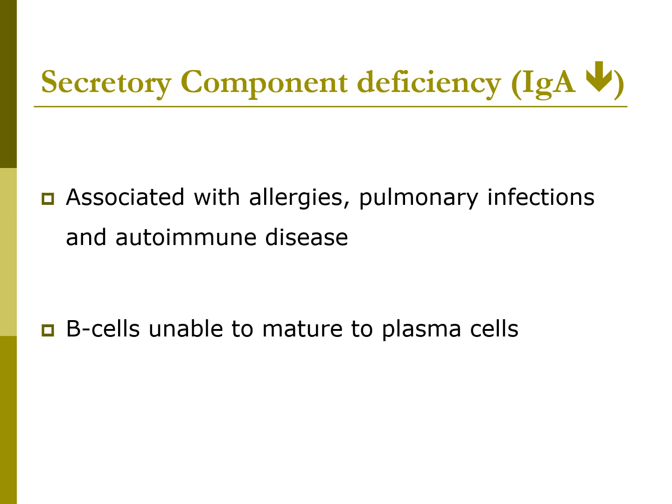Secretory component deficiency is the most common B cell disorder, affecting 1 in every 400 to 800 people. This condition may actually evolve into CVID. It is associated with allergies, pulmonary infections, and autoimmune diseases. Clinically, patients are generally ill and may have autoimmune disorders like lupus or thyroid issues, but they are no more susceptible to viral diseases. Their B cells are unable to mature to plasma cells.